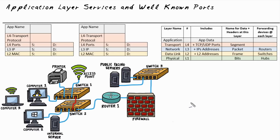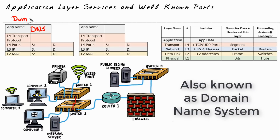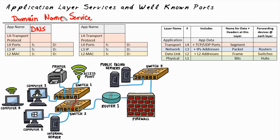In the TCP/IP protocol stack, there is an application layer service called DNS, which is an acronym that stands for Domain Name Service. DNS gives the ability to provide a name like Google.com and get an IP address associated with that name, so that our computer can then try to connect to that server based on its IP address. So in addition to web services and file services, another service in the TCP/IP protocol suite is the application layer service of DNS, Domain Name System.